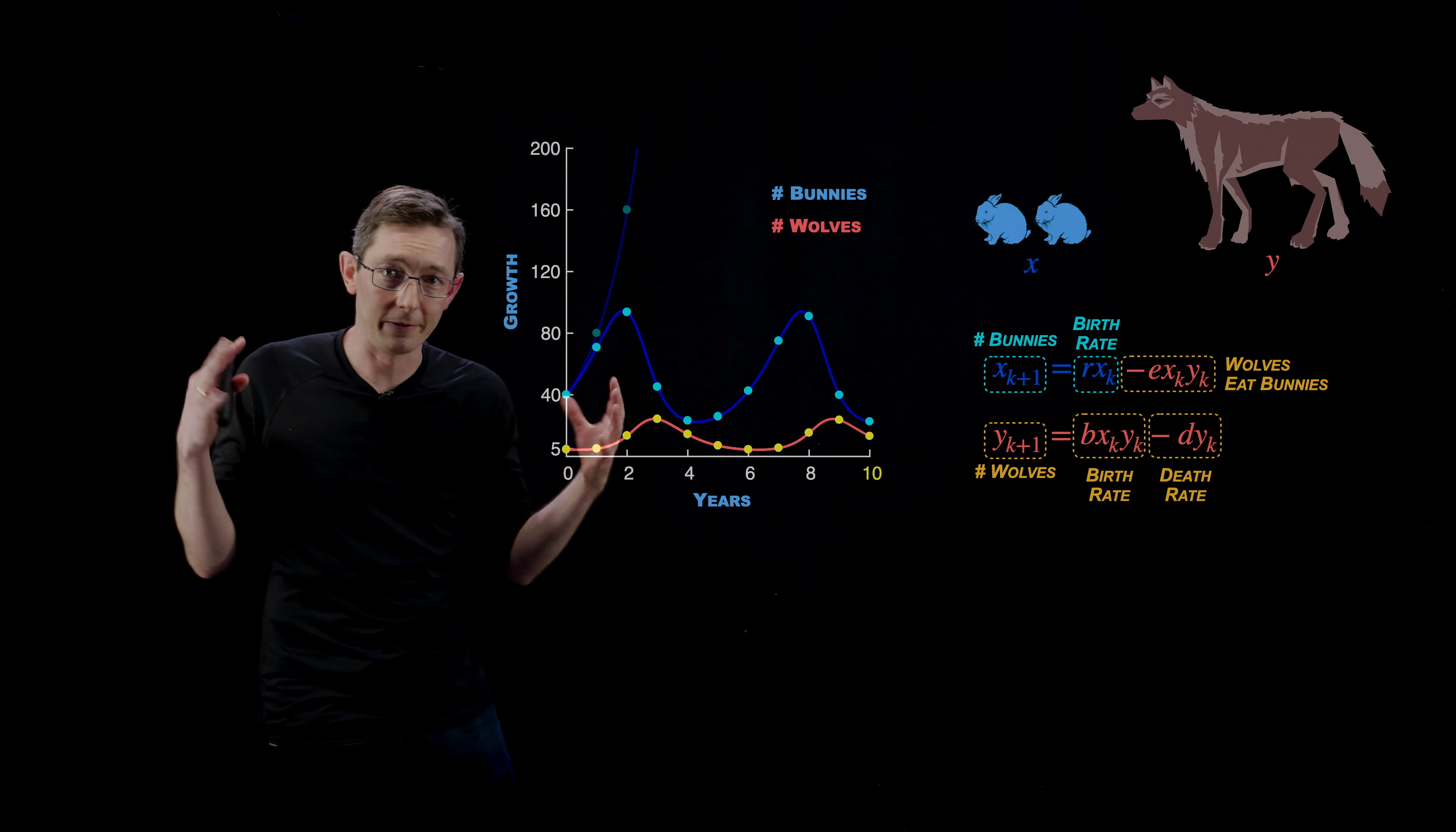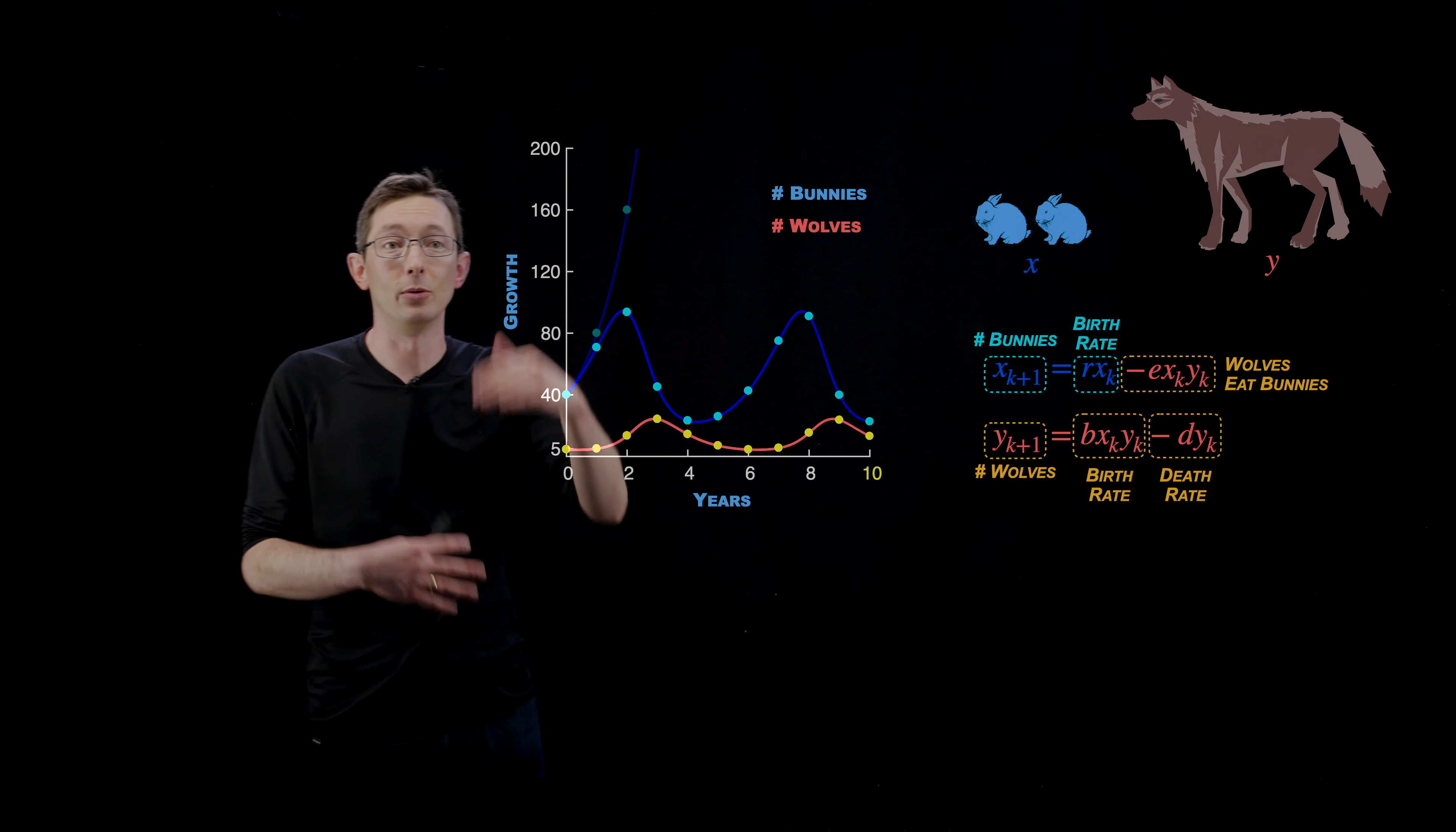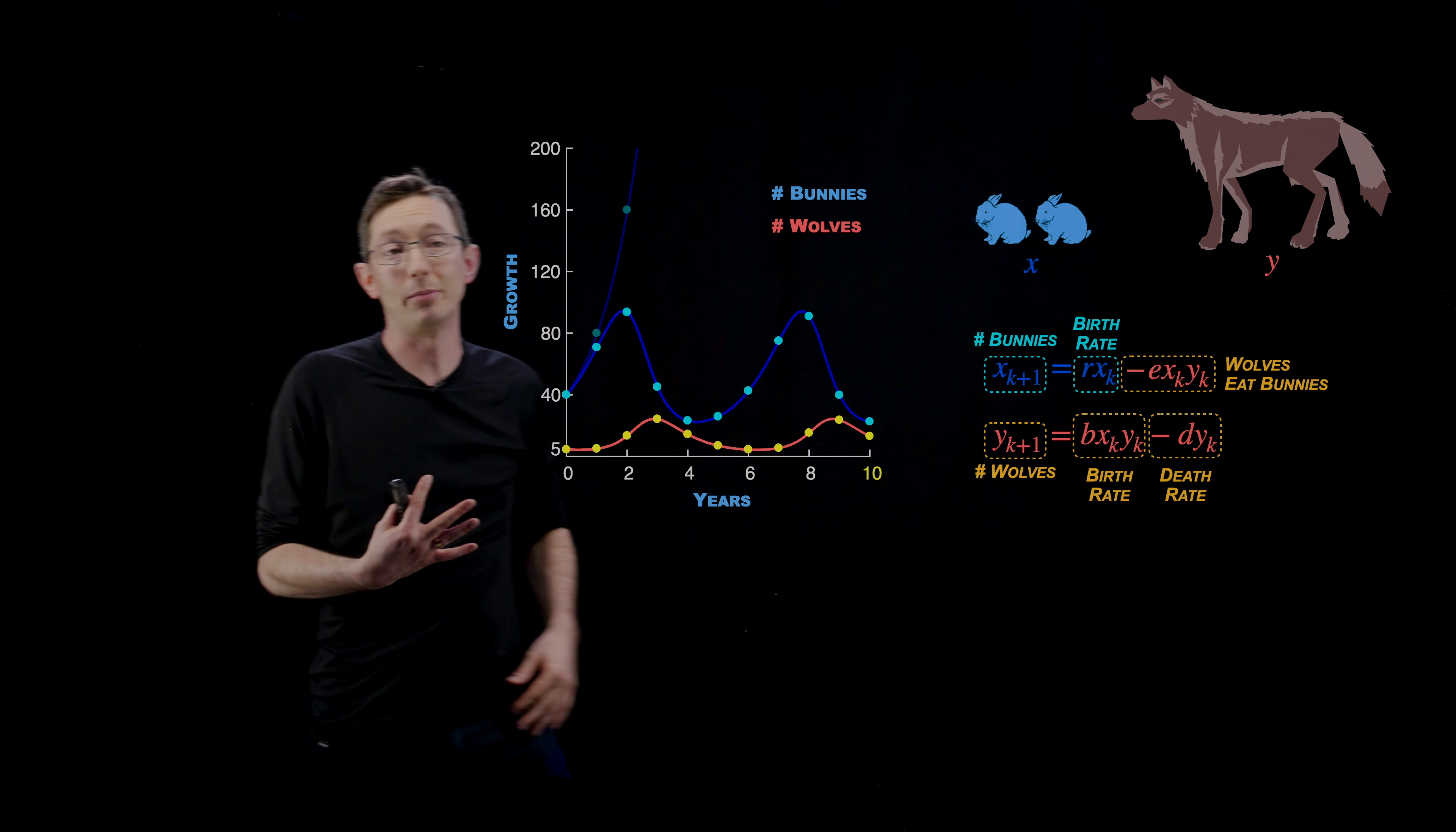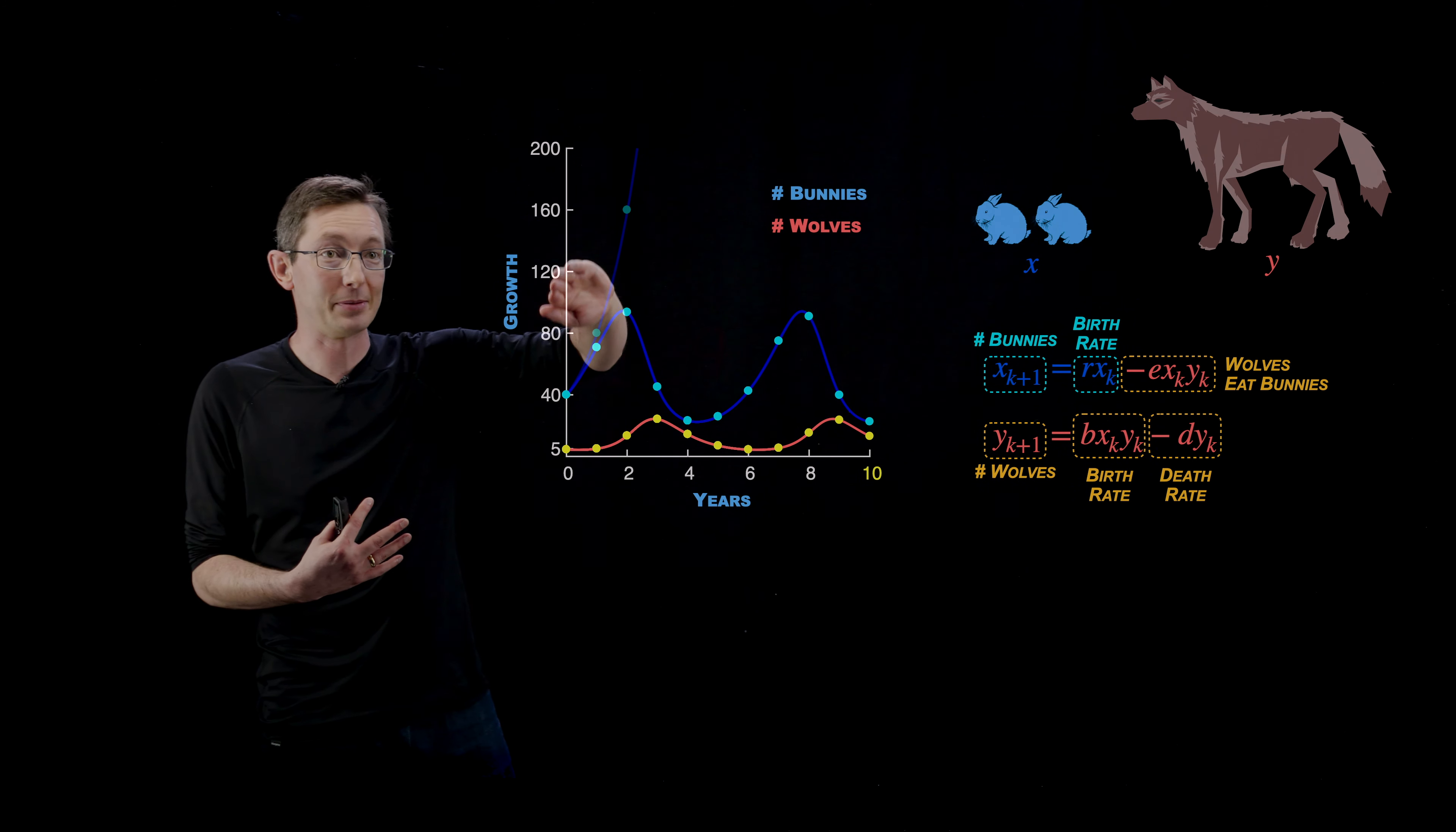It might be finite resources. It might also be predators. So we'll talk about predator prey models and how the existence of wolves that eat bunnies also stops the system from growing exponentially forever. So that's also stuff we're going to talk about.